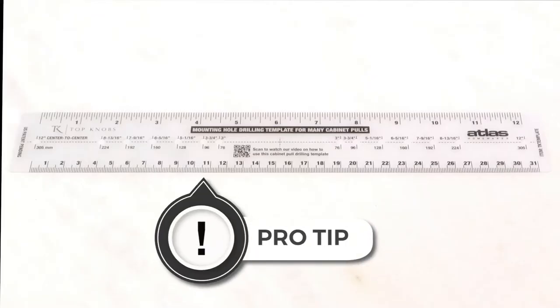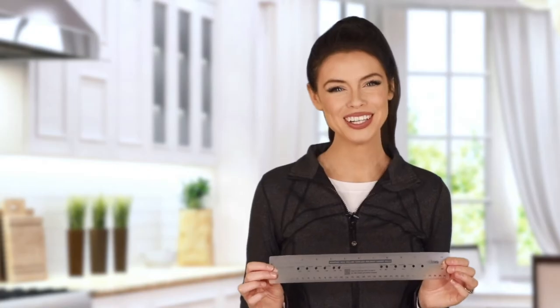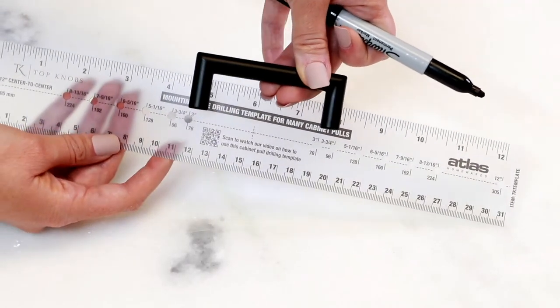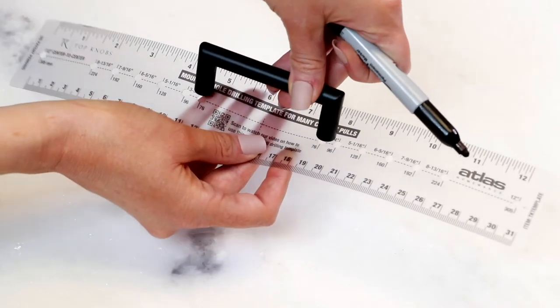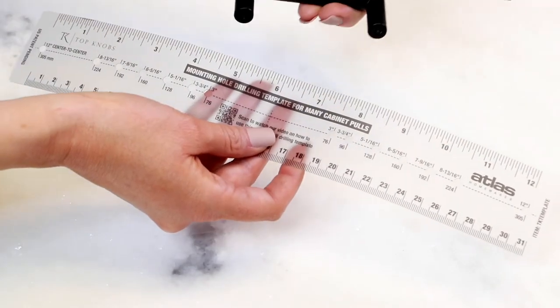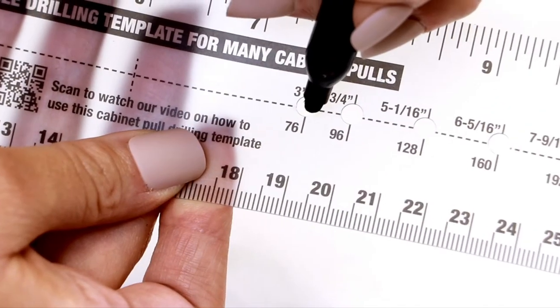Pro tip: use a template to mark the hole locations for your pulls. We've included a complimentary installation template with your order. The template includes holes for multiple sizes of pulls. Compare the template to your pulls and note the one that matches your pulls. You may want to mark it with a sharpie.